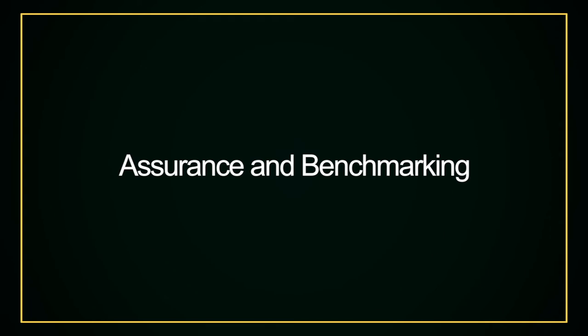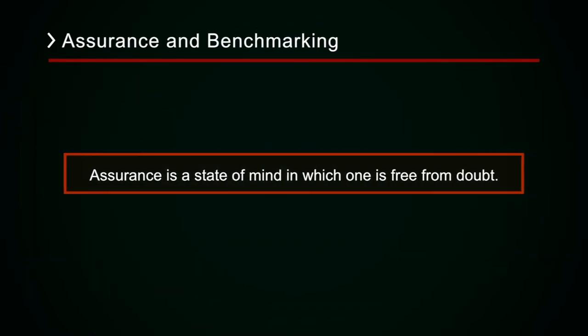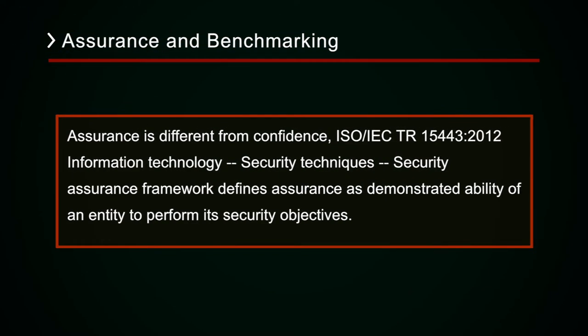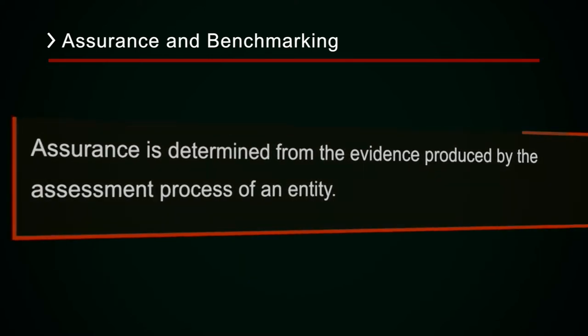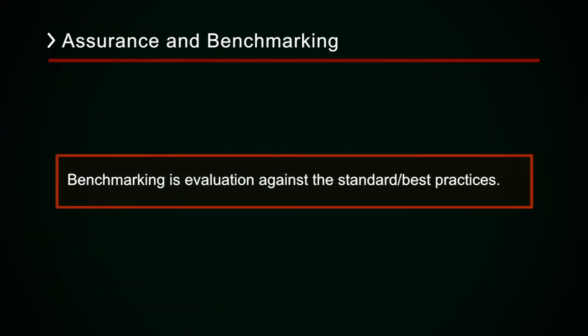In this session we are going to discuss, first, what assurance is — assurance and benchmarking. Assurance can be said to be the state of mind in which one is free from doubt. It is defined in ISO/IEC TR 15443:2012, Information Technology Security Techniques, Security Assurance Framework, as the demonstrated ability of an entity to perform its security objectives. Assurance is different from confidence — it is driven by facts and is determined from the evidence produced by the assessment process of an entity. We do the assessment, generate the evidence, and then we have the assurance. Similarly, benchmarking is the evaluation against any standard or best practices.